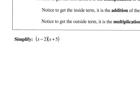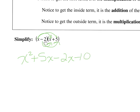Distribute the x term first: x times x is x squared, x times 5 is 5x. Then negative 2 times x is negative 2x, and negative 2 times 5 is negative 10. The 2 and the 5 get multiplied to make 10, but they add to make the middle term. Because they're different signs, they actually subtract, giving us x squared plus 3x minus 10.